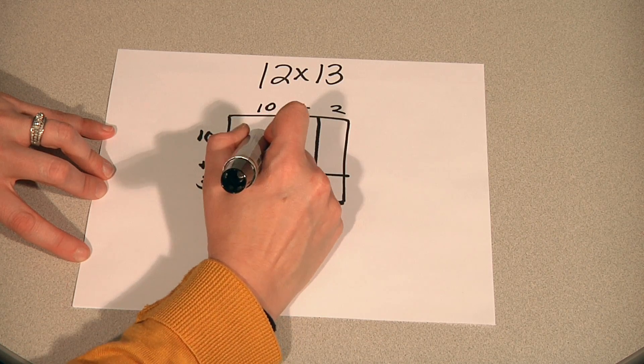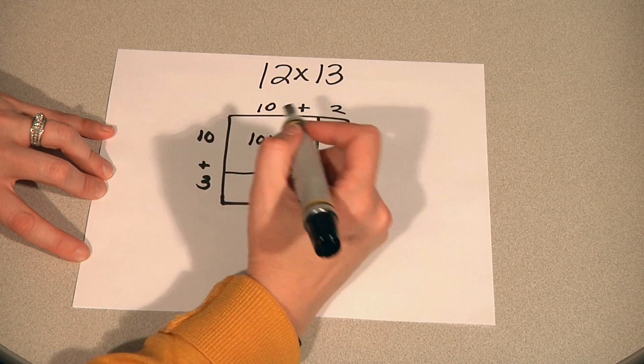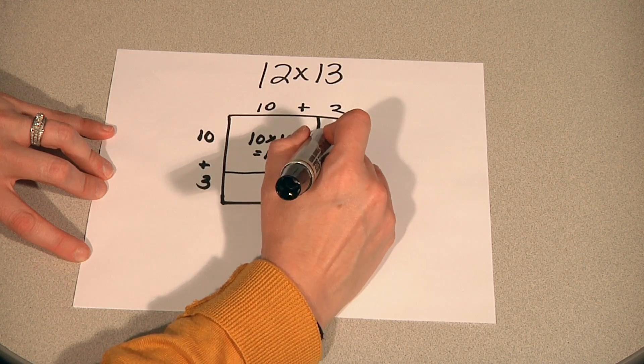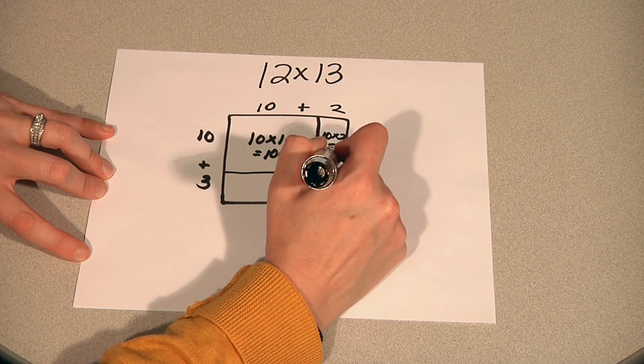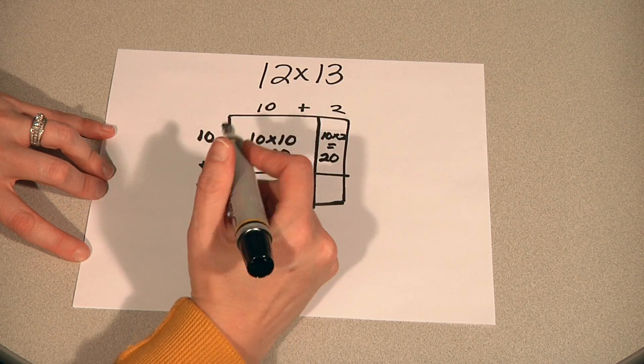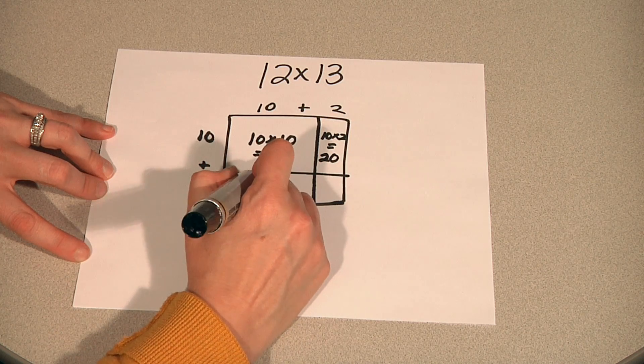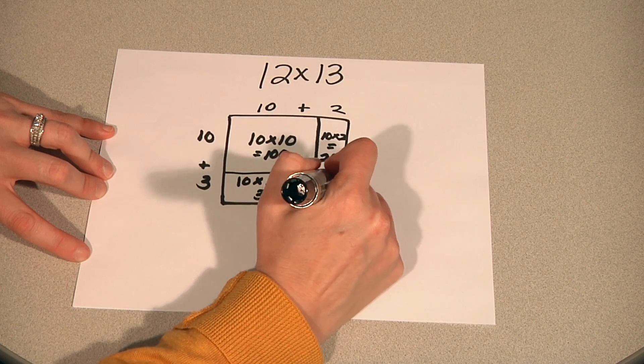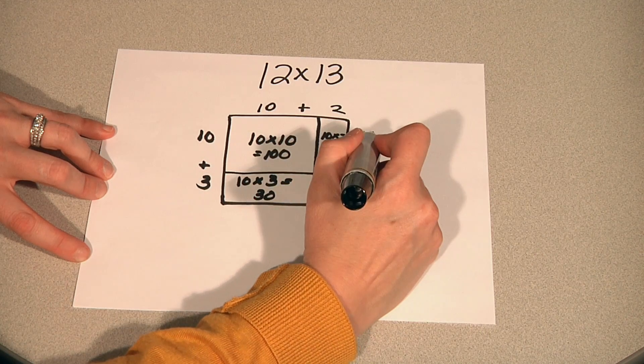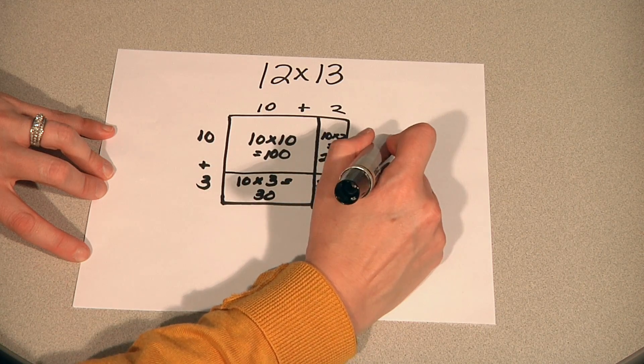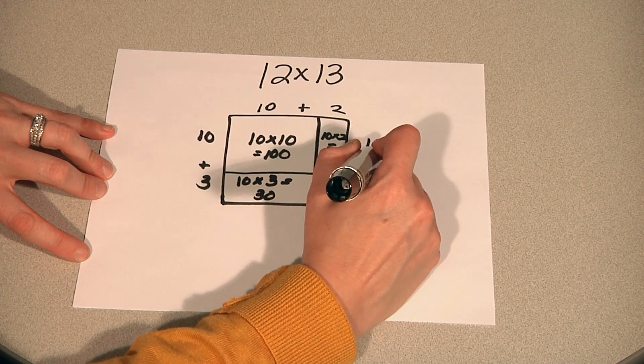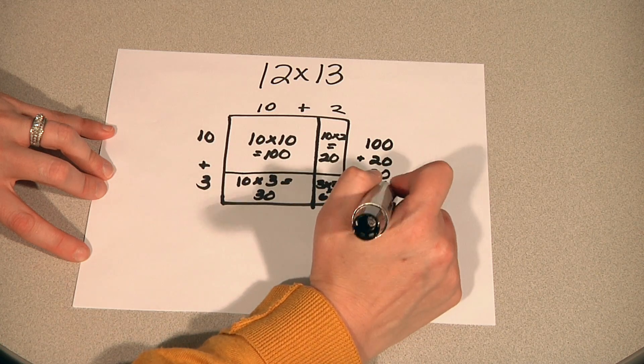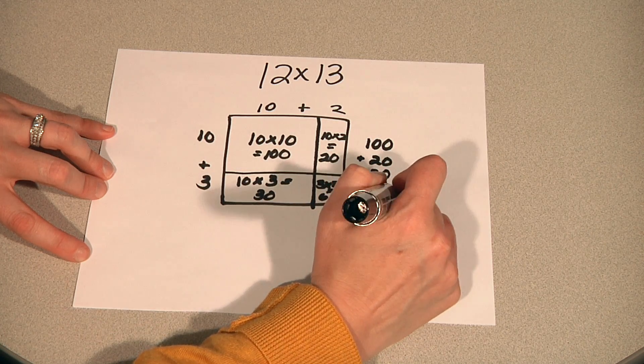In this box, we're going to do ten times ten equals one hundred. Here we're going to do ten times two equals twenty. Here we have ten times three equals thirty. And three times two equals six. Now we can add up each of the smaller areas. One hundred plus twenty plus thirty plus six equals one hundred fifty-six.